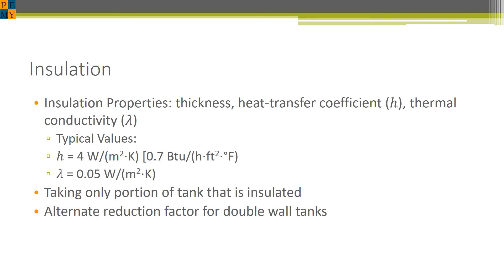When considering insulation, this depends on the thickness of the insulation as well as properties like the heat transfer coefficient or the thermal conductivity. API 2000 lists typical values that can be used for these different parameters. Only a portion of the tank surface area is actually used to determine how much credit can be gained from insulation. It's the portion of the tank that's actually insulated. You take a ratio of the insulated portion to the total surface area of the tank, and that's how much you can account for insulation. An alternate reduction factor is found for double-wall tanks where the second wall can be considered a form of insulation as well.